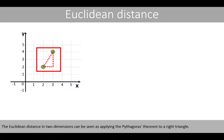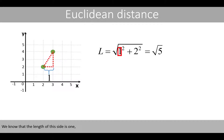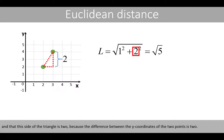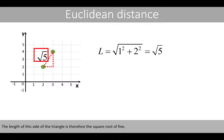The Euclidean distance in two dimensions can be seen as applying the Pythagorean theorem to a right triangle. We know that the length of one side is 1, and that the other side of the triangle is 2, because the difference between the y-coordinates of the two points is 2. The length of the hypotenuse is therefore the square root of 5.